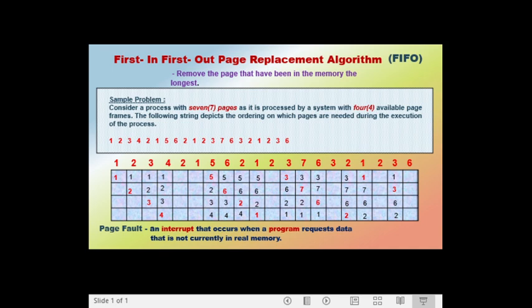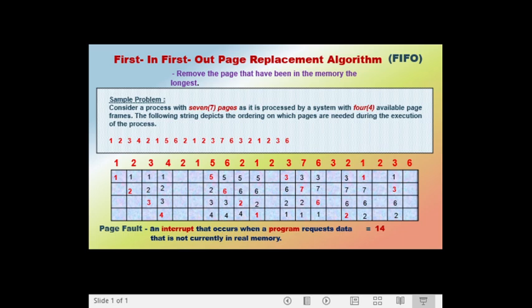The last page called is page 6. The frames contain pages 1, 3, 6, and 2. Page 6 is in the frame, so calling page 6 does not cause a page fault. Since we are done with all pages, we now count the total number of page faults: 1, 2, 3, 4, 5, 6, 7, 8, 9, 10, 11, 12, 13, 14. Therefore, the total number of page faults is 14 using the First-In-First-Out page replacement algorithm.